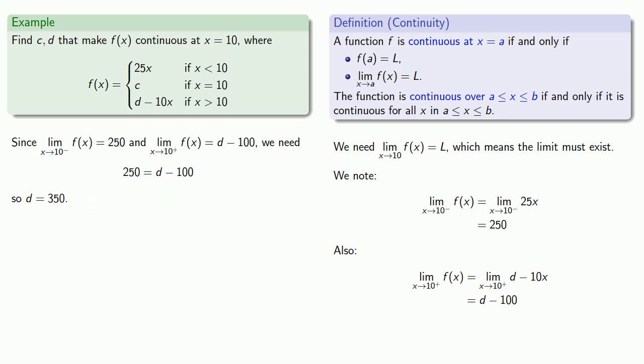And in that case the limit as x approaches 10 of f of x has to be 250. And for continuity, we need the limit as x approaches 10 of f of x to be the same as f of 10, and so we need c to be equal to 250. And so there's our value of d and our value of c.